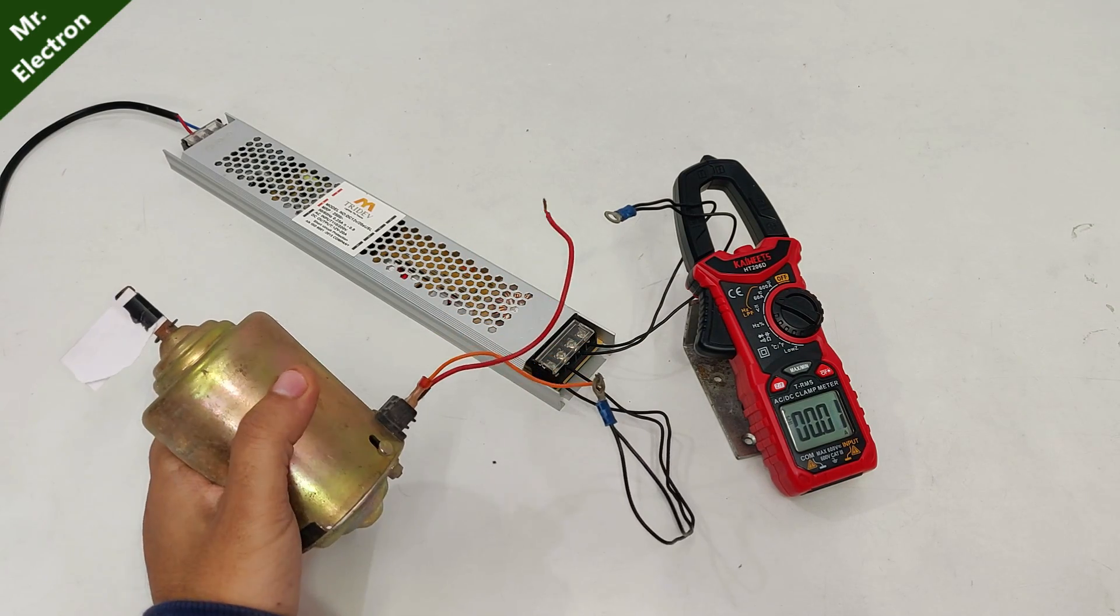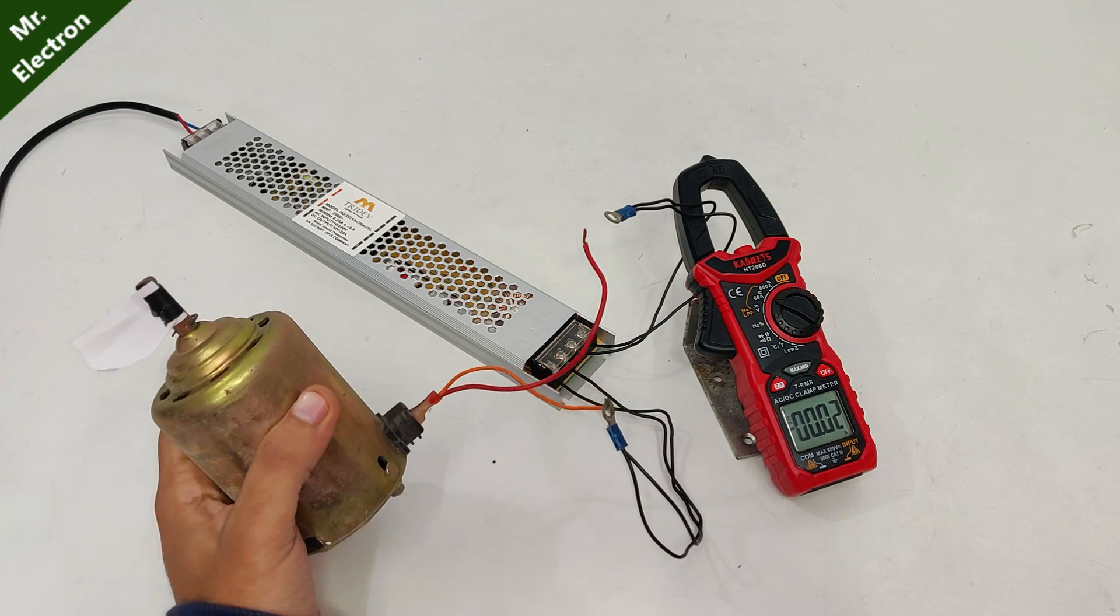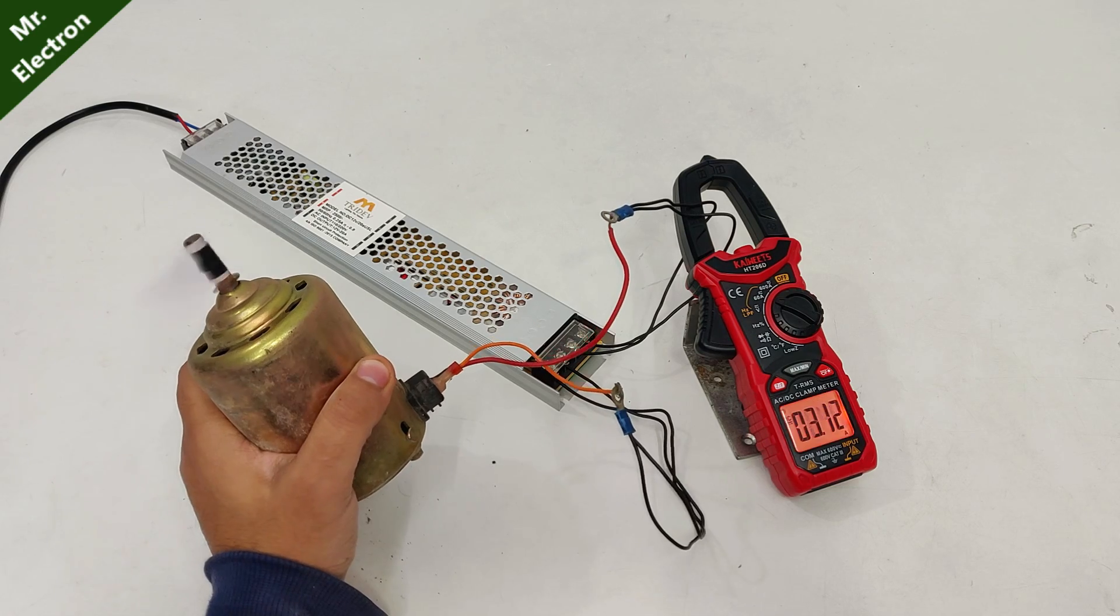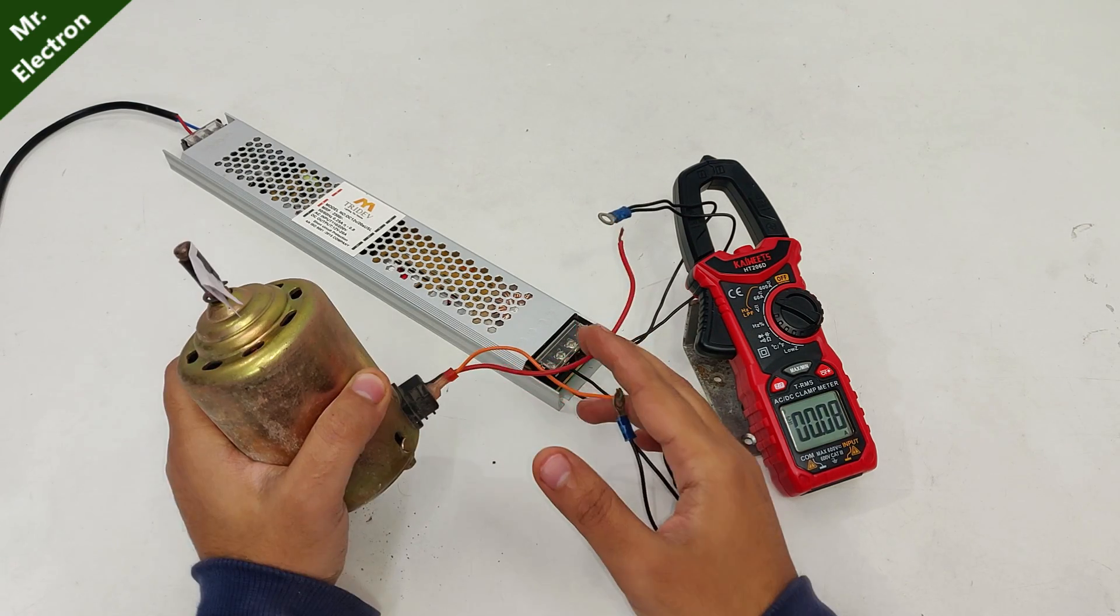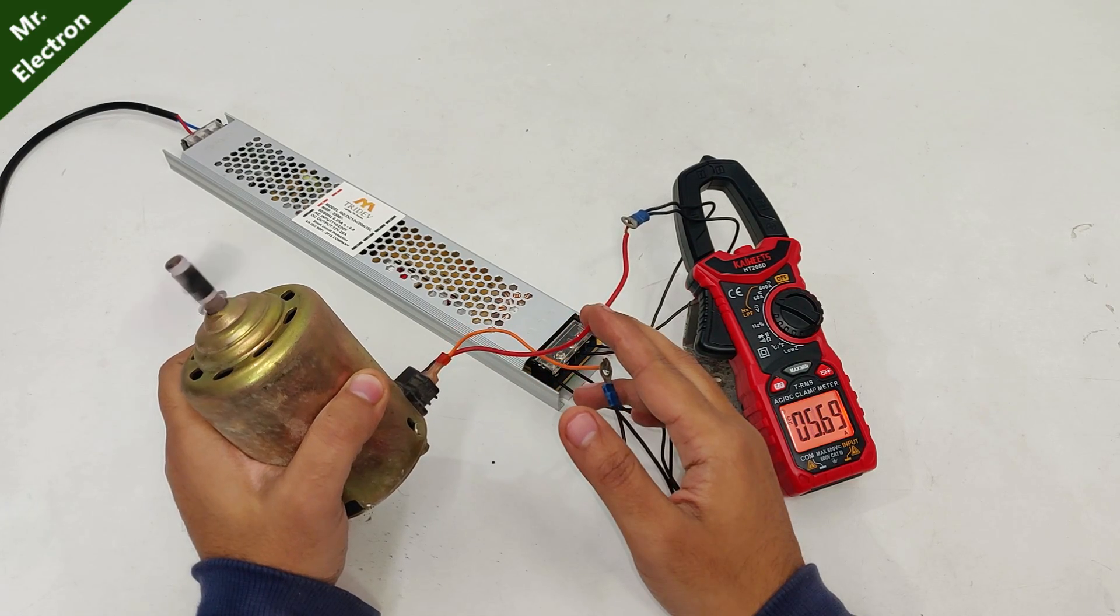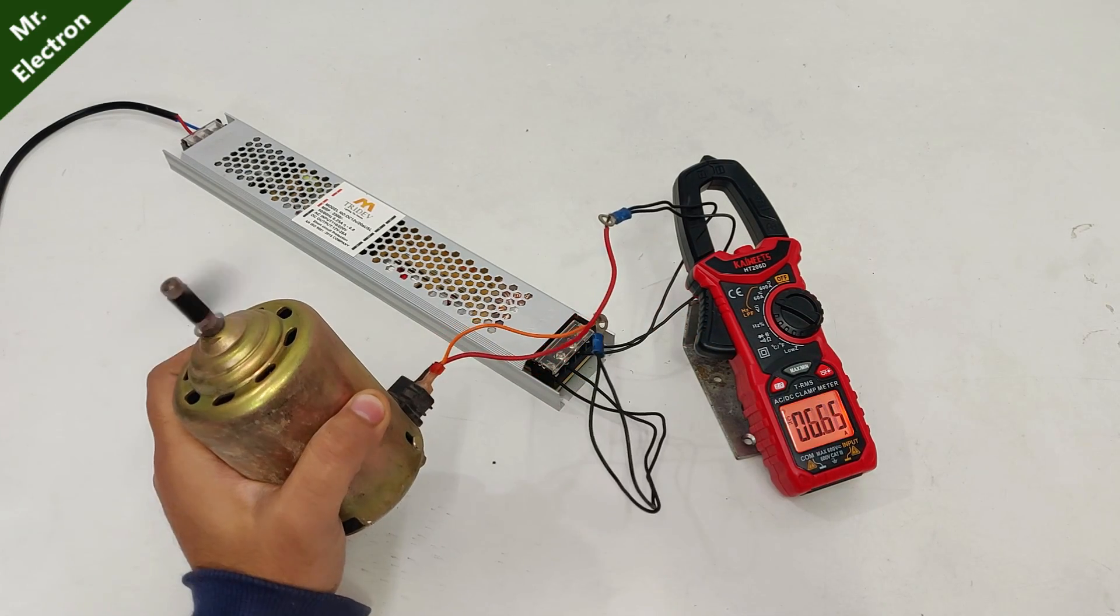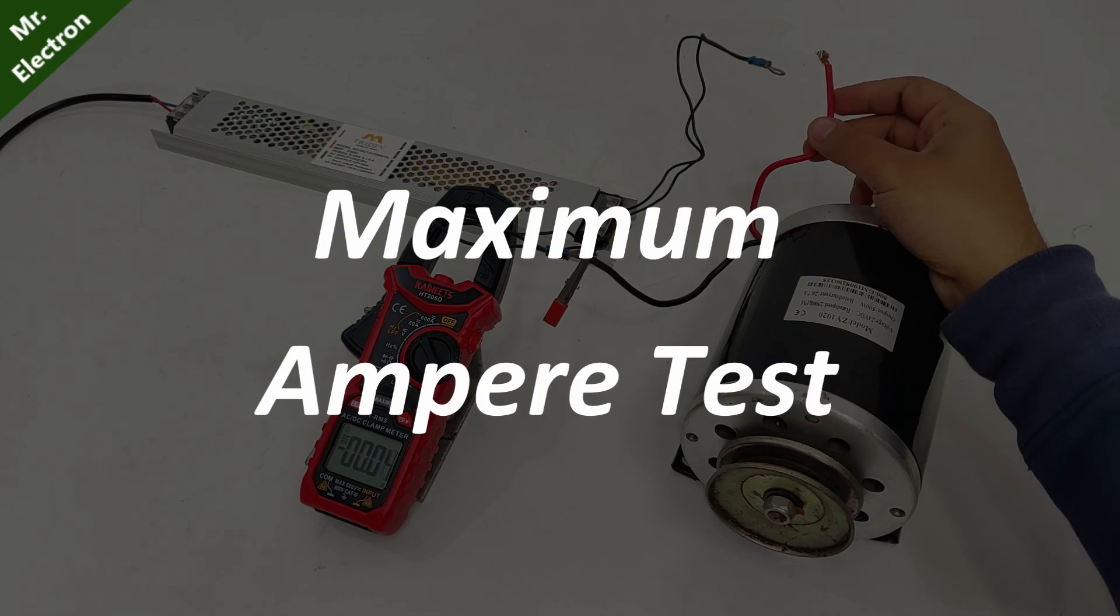So let's turn on the supply and test the amperes. 1.6. Let's see the starting amperes, it was peaking at 5. Once again, 6.65.